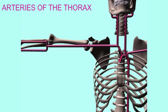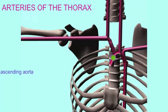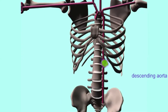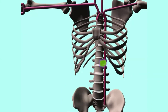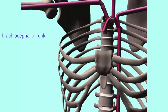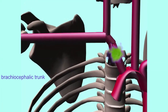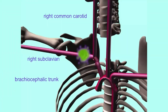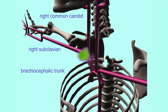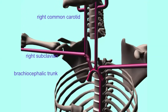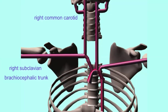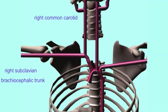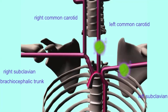In most people, the arch of the aorta gives rise to three blood vessels: a brachiocephalic trunk or brachiocephalic artery, which gives rise to the right subclavian artery and the right common carotid artery, and on the left side, a left common carotid and a left subclavian, which do not arise from a left brachiocephalic trunk.